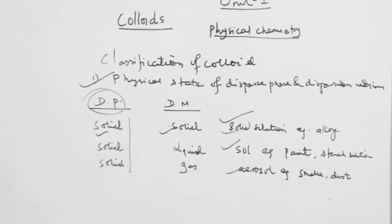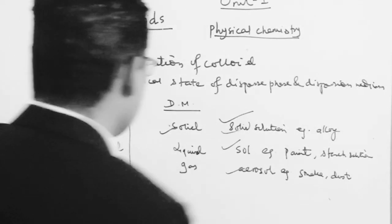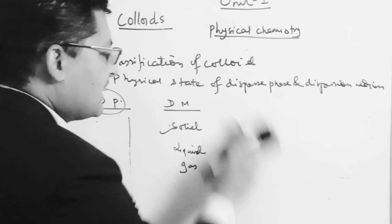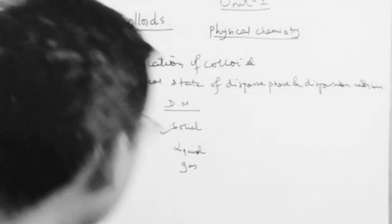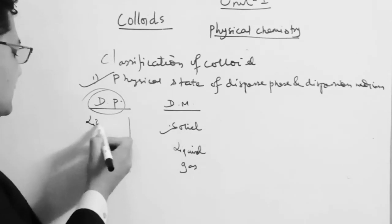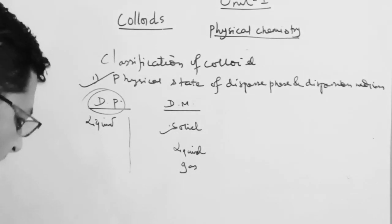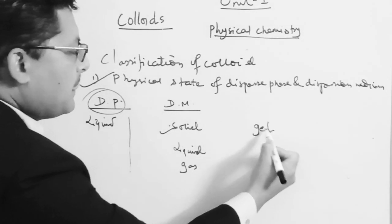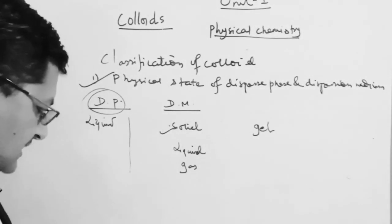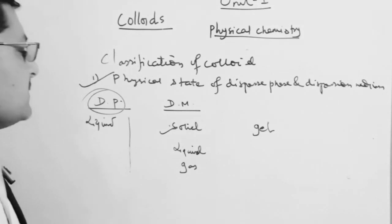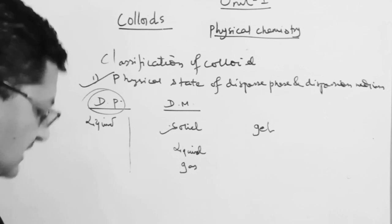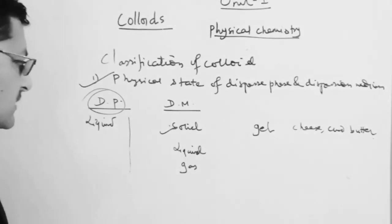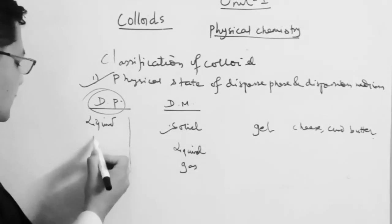When dispersed phase is liquid and dispersion medium is solid, this is called a gel. What is gel? It is where liquid is the dispersed phase and solid is the dispersion medium. Examples of gel include cheese, butter.